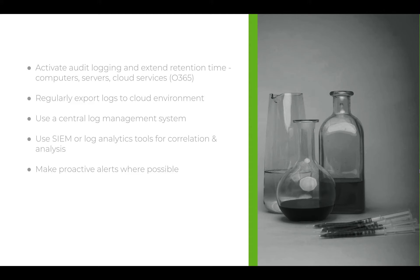Use SIEM — security incident and event management — or log analytics tools that can correlate and analyze your logs, looking for anomalies and security incidents. If you're looking for something open source, Security Onion is a great tool. The new Security Onion hybrid is really nice — it has a good GUI and brings several applications together, allowing you to analyze logs and create alerts using the ELK Stack: Elastic, Kibana, and Logstash. Wherever possible, make your alerts proactive — all this data goes to logs for after the fact, but you want to catch incidents as soon as they happen or stop them from happening.